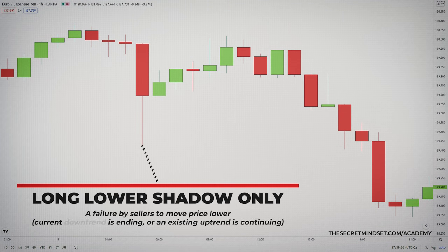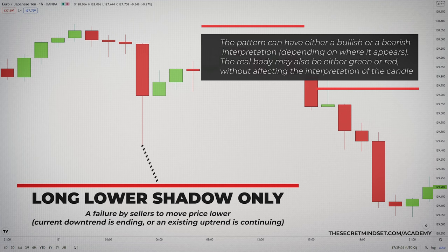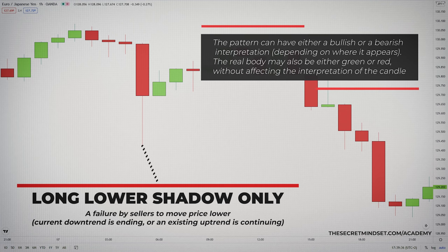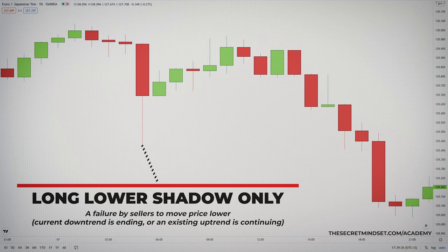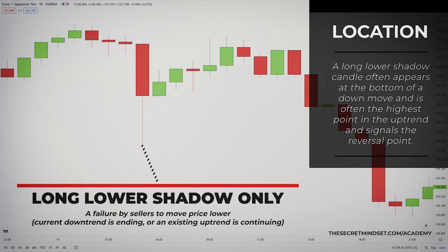The appearance of a candlestick with a long lower shadow indicates a failure by sellers to move price lower, which leads to the conclusion that either the current downtrend is ending or an existing uptrend is continuing. However, the pattern can have either a bullish or a bearish interpretation. The interesting thing about this pattern is that it can be bullish or bearish, depending on where it appears. The real body may also be either green or red, without affecting the interpretation of the candle. A long lower shadow candle often appears at the bottom of a down move, and is often the highest point in the uptrend, and signals the reversal point.